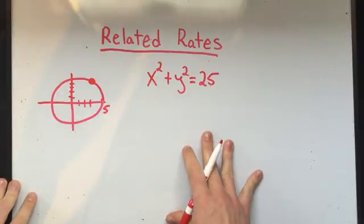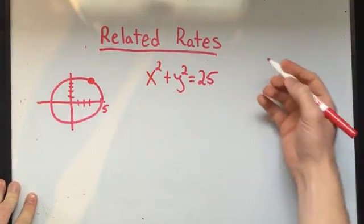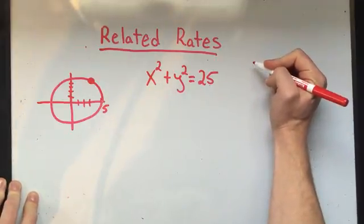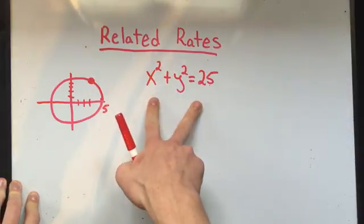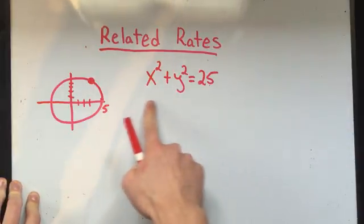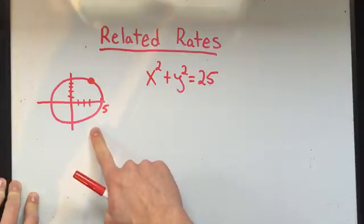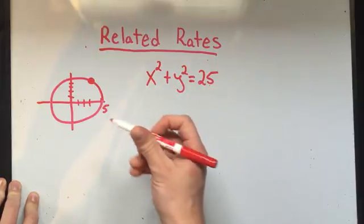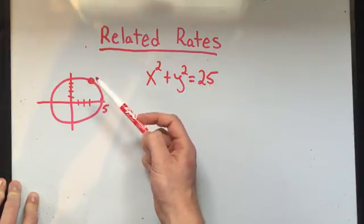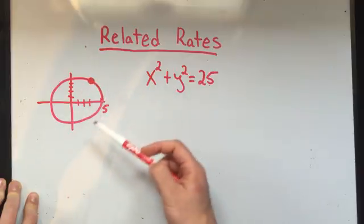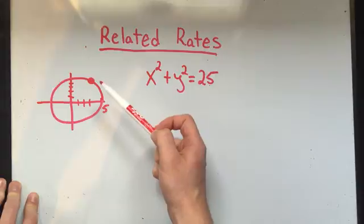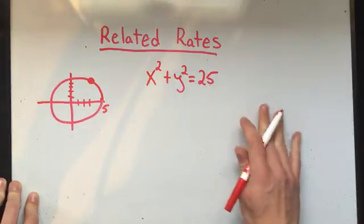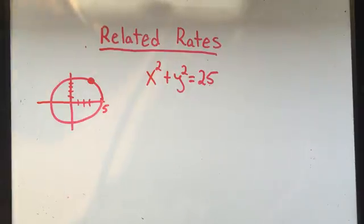I think it's best if we do an example so you can see what's going on and how to solve these things. So in all the related rate problems, they have to give you one rate or two rates. For this problem, maybe I should start by saying, this right here is the equation of this circle. This is a circle centered at the origin with radius 5. And I've got this dot or particle on the circle. Just imagine it's traveling around the circle.